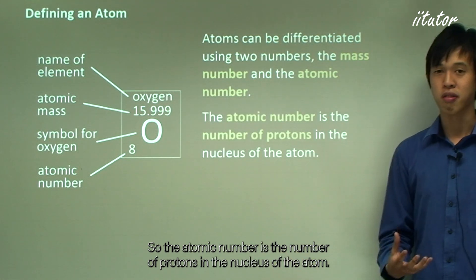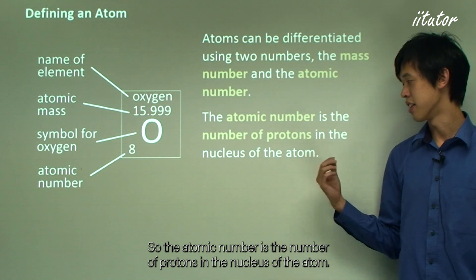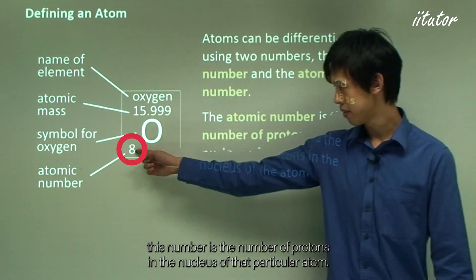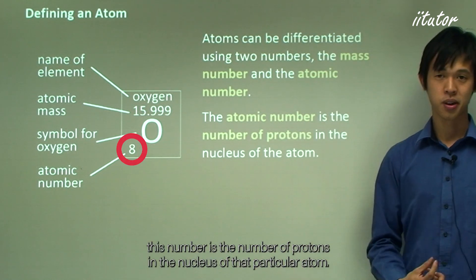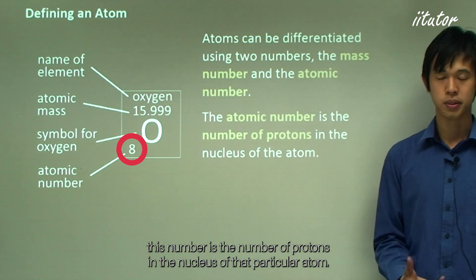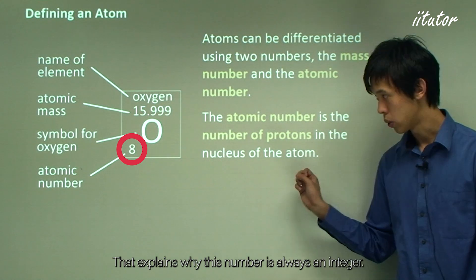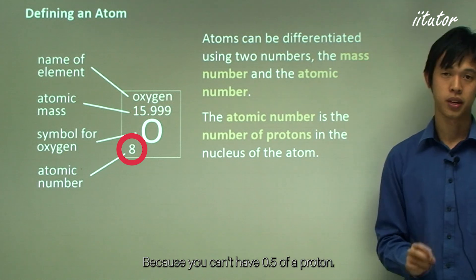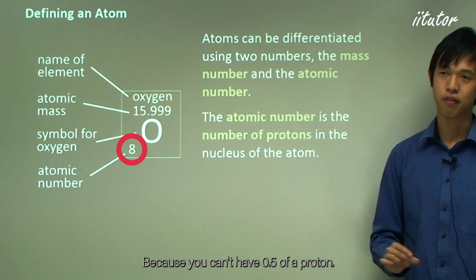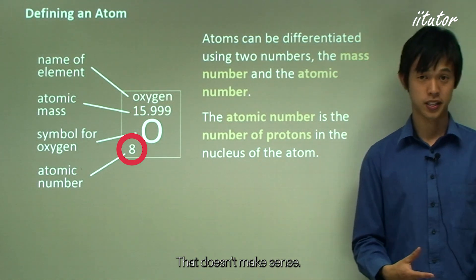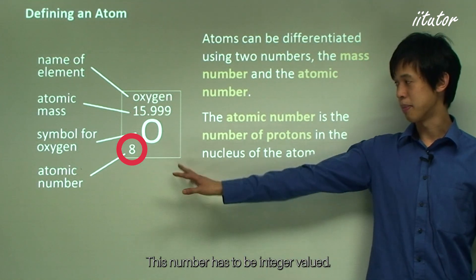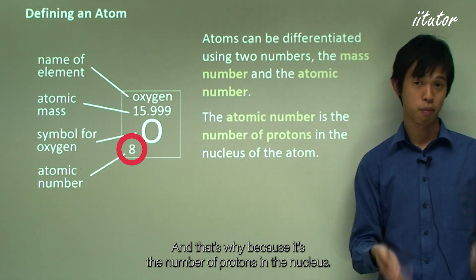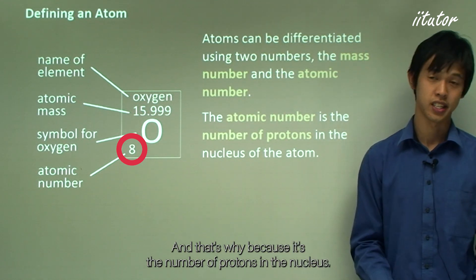The atomic number is the number of protons in the nucleus of the atom. That explains why it's always an integer — you can't have 0.5 of a proton. It has to be integer-valued because it counts the number of protons in the nucleus.